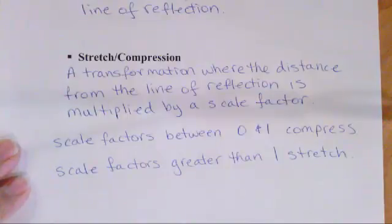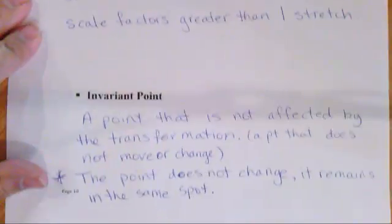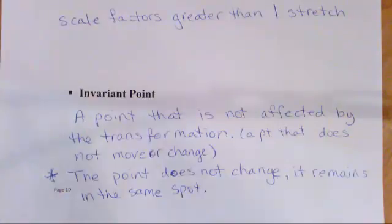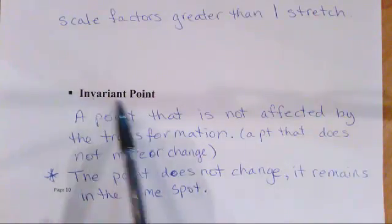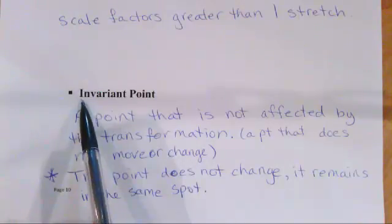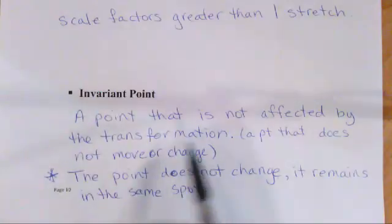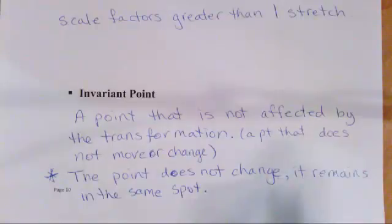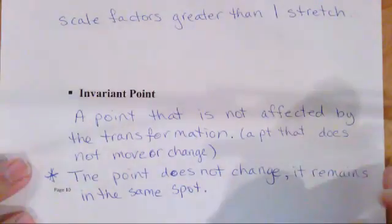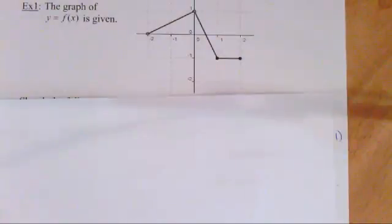An invariant point is important — it's a point that is not affected by the transformation. The word 'invariant': 'vary' means change and 'in' is a negative, so it does not change. It's a point that does not move or change — wherever it was on the original graph, that's where it will be after the transformation.